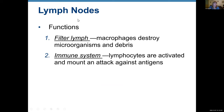The functions of lymph nodes are: to filter the lymph — macrophages destroy microorganisms and debris — and immune function, where lymphocytes are activated inside the lymph node and mount an attack against antigens. B cells inside lymph nodes are activated by antigens; some B cells are selected to become plasma cells and produce antibodies. This is where lymphocytes are activated and where lymph is filtered.